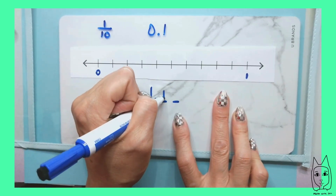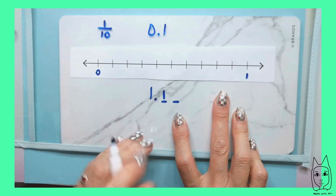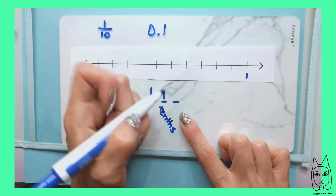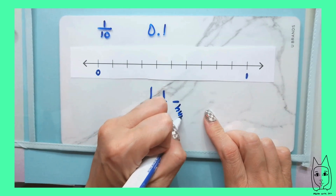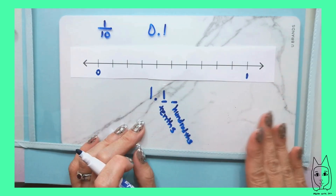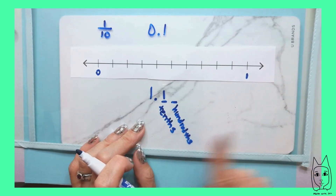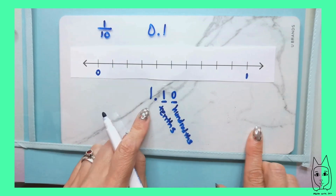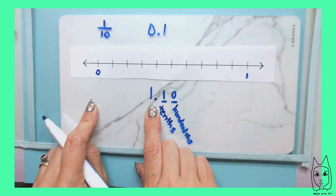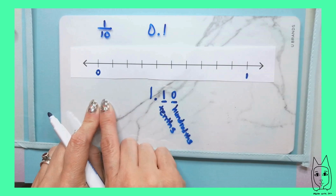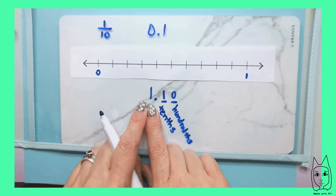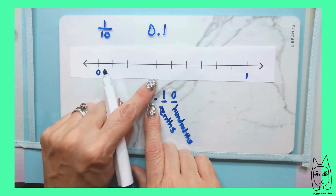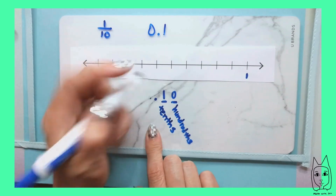So one-tenth would be right here — this is the tenths place. The next place value is the hundredths. When you don't have a value for a place value to the right, you're just going to put a zero, like we did when we were doing the whole numbers to the left in grade three — when we didn't have ones, we would put a zero.